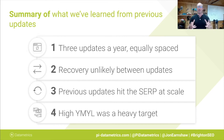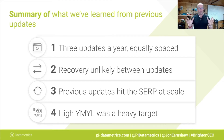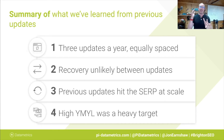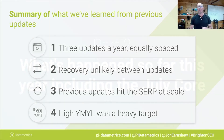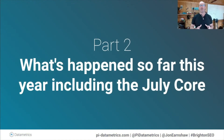So what can we learn from those previous years? Three updates a year, around 115 days in between each one, recovery chances of zero. Previous updates hit the SERP at scale — didn't matter if you're on page one or page five, you still saw an impact. And high YMYL was a heavy target. Things have changed. Let's bring things up to date and talk about this year — 2021 from a core perspective is very different to previous years.